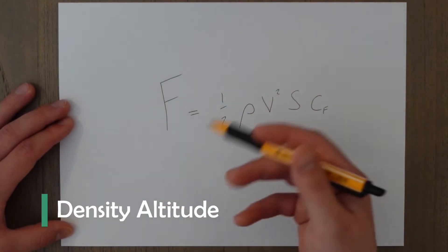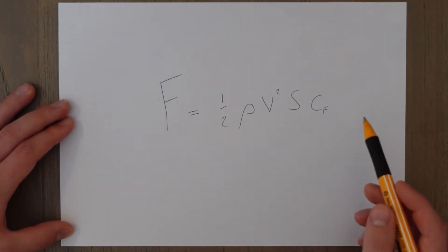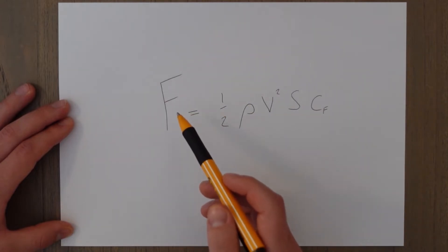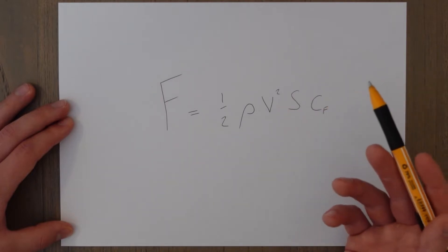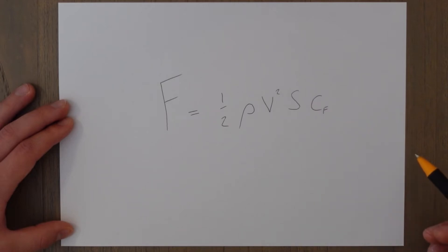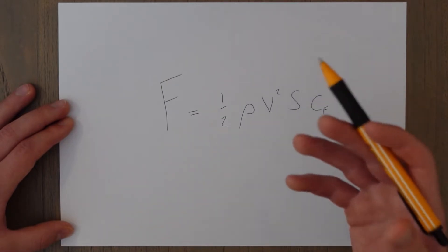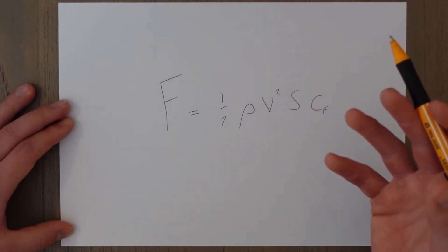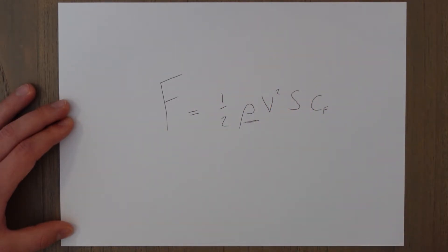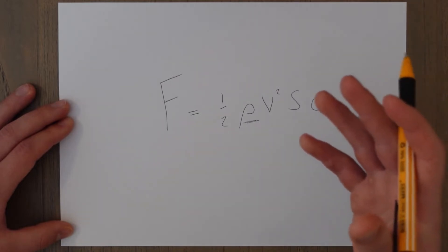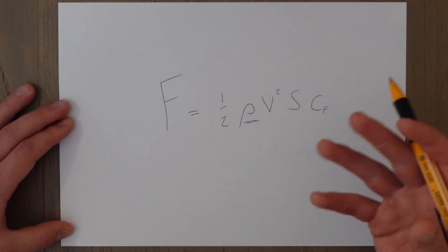Aircraft performance in terms of aerodynamic forces depends on the formula: force equals one-half rho v-squared s cf, where the force is either lift or drag, rho is the density, v is the speed, s is the surface area, and cf is a coefficient of lift or drag. You can quite clearly see that density has an influence on this formula. It also has an effect on engine performance — generally speaking, more dense air is better for the engines.